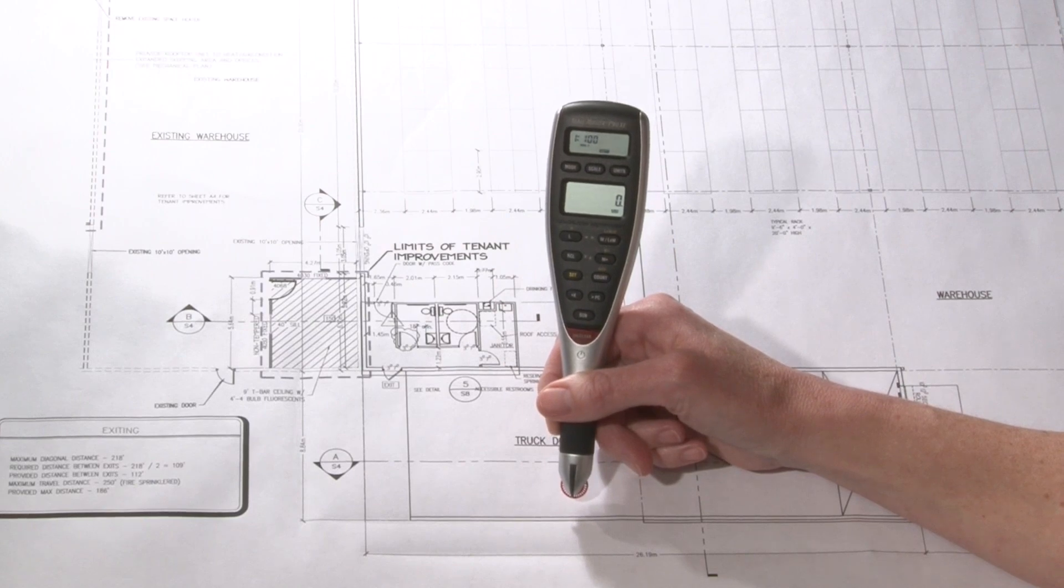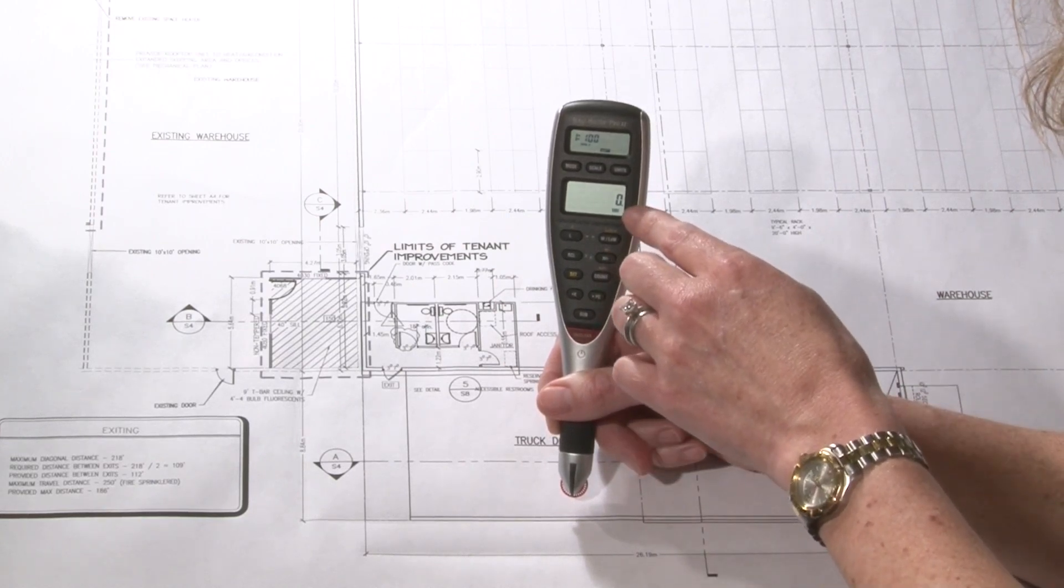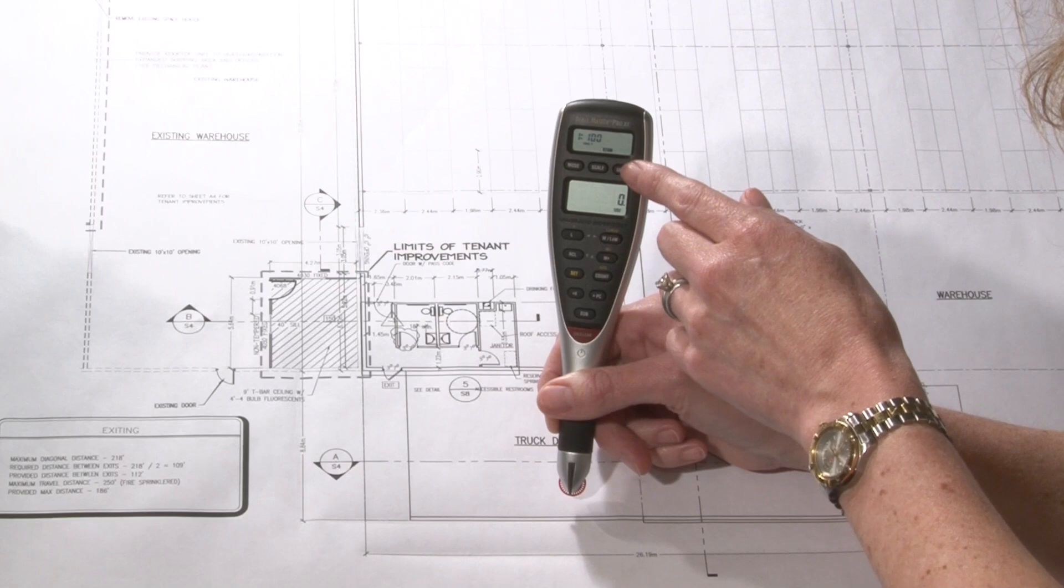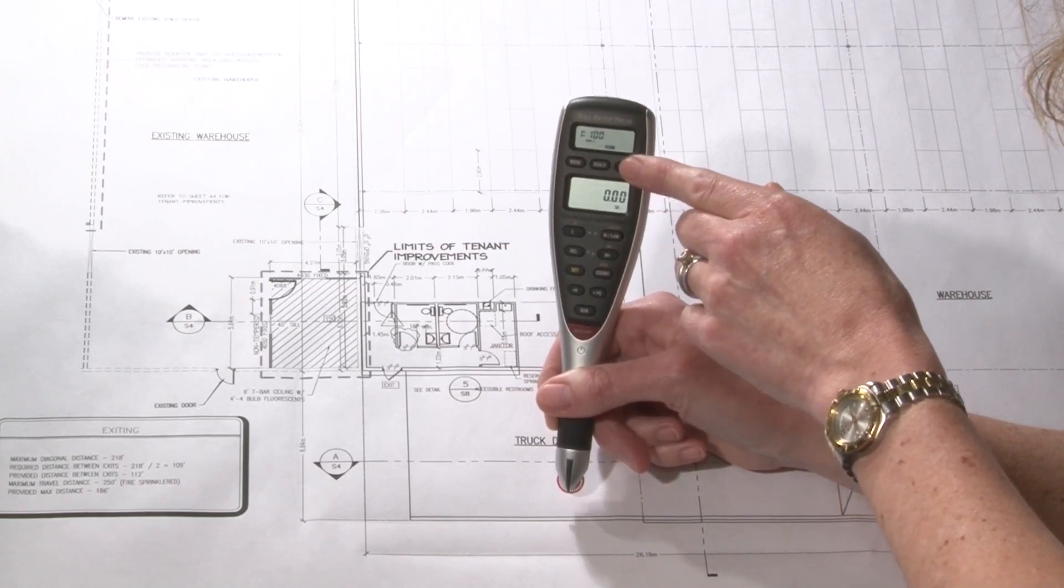Then I'm going to check the units. It's showing millimeters. By pressing the units button, I toggle through centimeters and then meters.